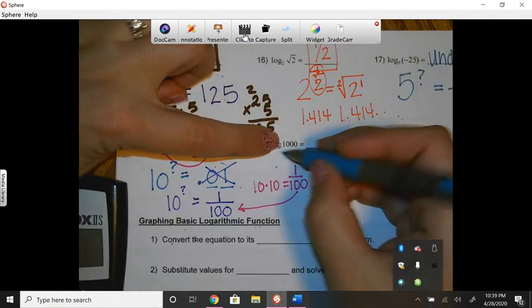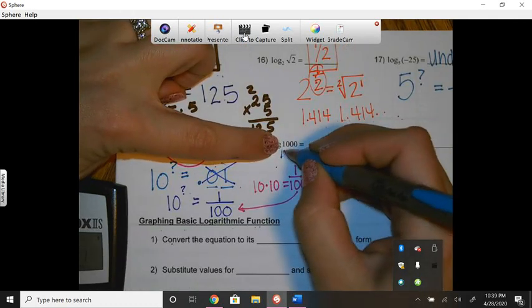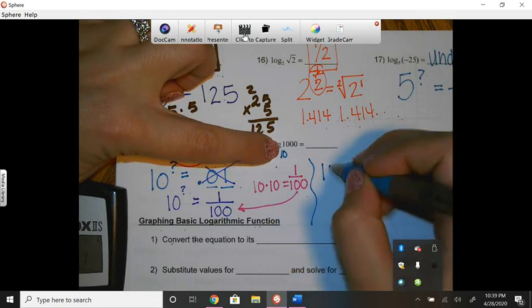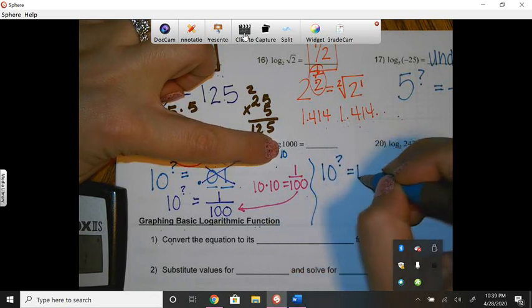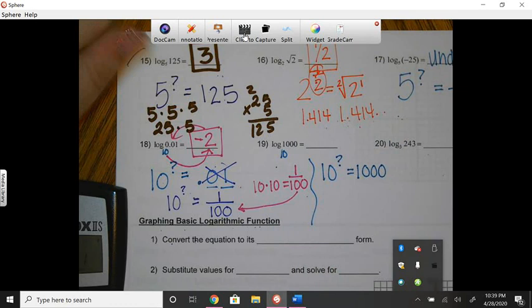Okay, let's go ahead and try another one. Notice the base number is not there, so we know it's a 10. So it's saying 10 to what power is 1,000?